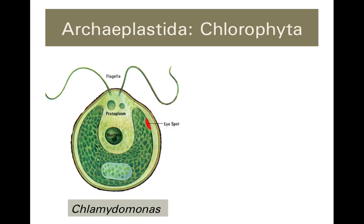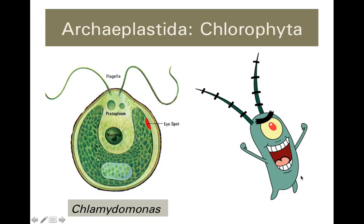Chlamydomonas, however, is a unicellular green alga. You can see it is motile to help with phototaxis — moving towards the light. It has a structure called an eye spot that is photoreceptive; it doesn't form an image but allows the cell to travel towards light to optimize photosynthesis. You can see that large chloroplast and a starch plastid storing photosynthesis products. Here's a close relative of Chlamydomonas: the cartoon Plankton from SpongeBob SquarePants — you can see where the inspiration came from.